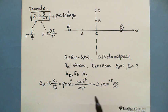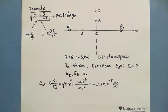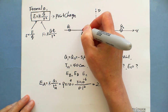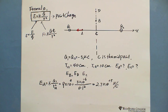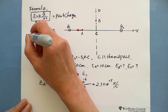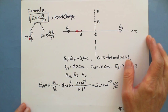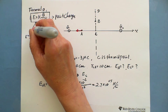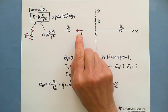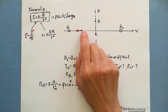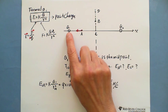The direction of E1A: by definition, the test charge is a positive charge, so the direction of force gives the direction of the electric field. At point A, placing a positive test charge near negative Q1, the force is attracted toward Q1 — so E1A points in that direction.